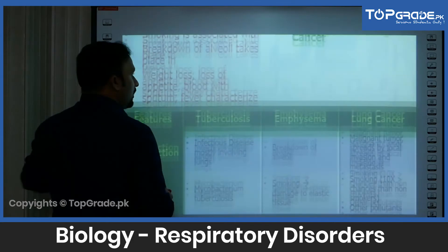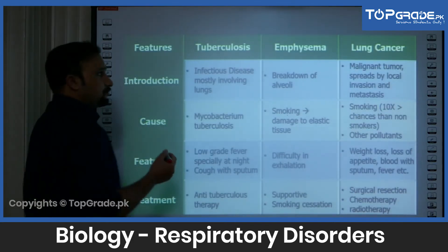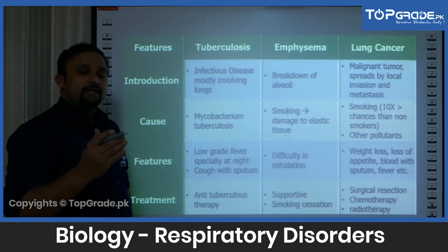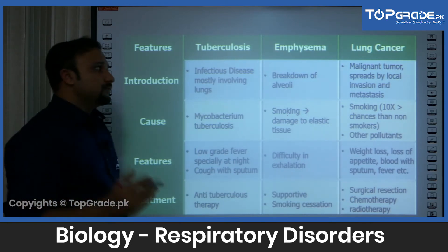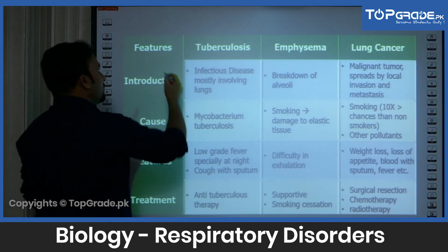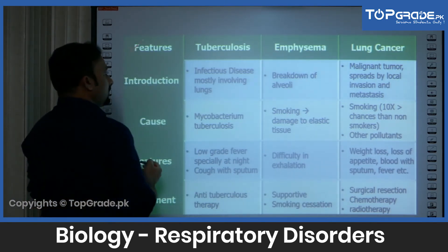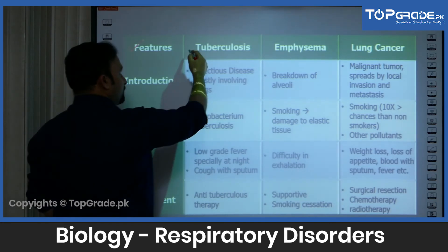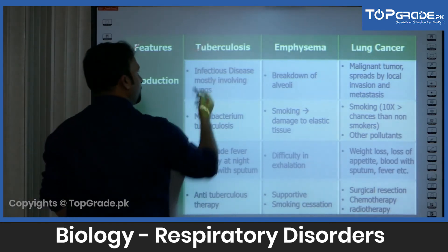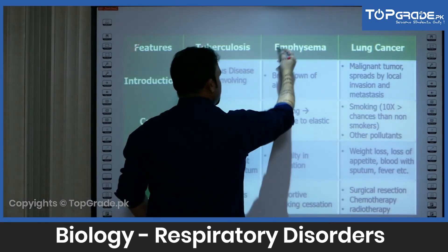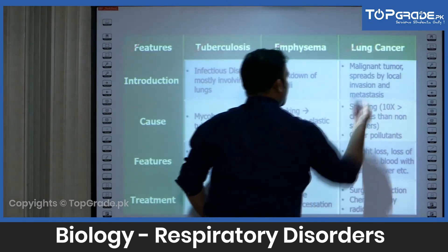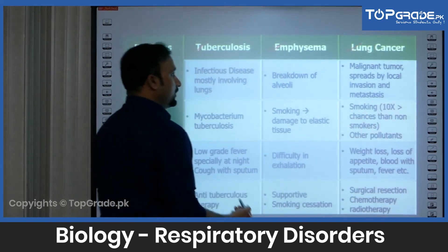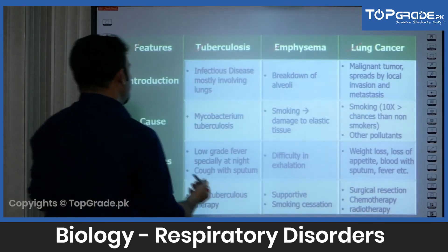Now let's construct a table to understand different important respiratory disorders. In the left column we have different features, the second column has tuberculosis, the third column has emphysema, and the fourth column has lung cancer.